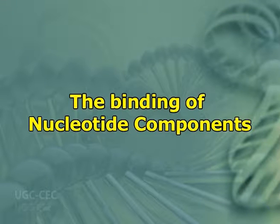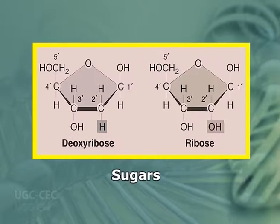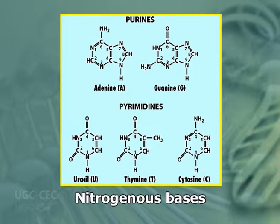The binding of nucleotide components — it is customary to number the carbon atoms of the nitrogenous base and deoxyribose molecule. The carbon atoms in deoxyribose are numbered 1-prime to 5-prime. The numbering begins to the right of the oxygen atom and proceeds clockwise. The atoms in the purine ring are numbered 1 to 9, and for pyrimidine it is 1 to 6, because purine has 9 carbons while pyrimidine has 6.